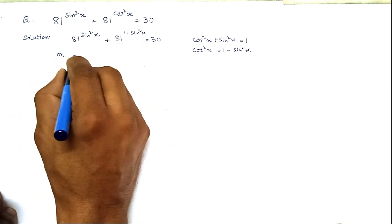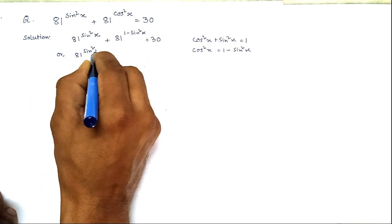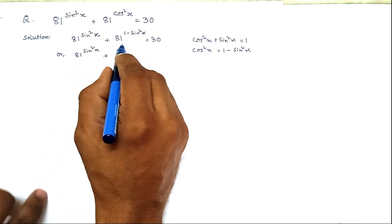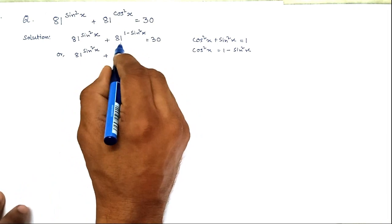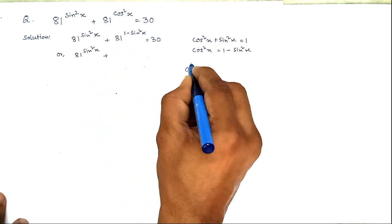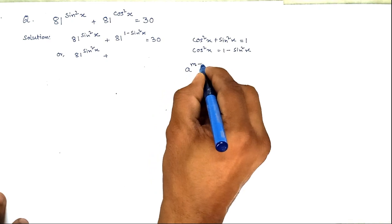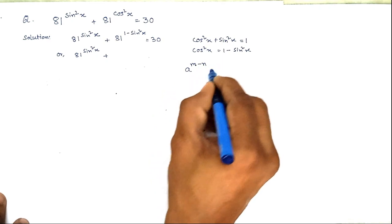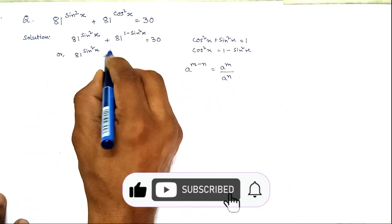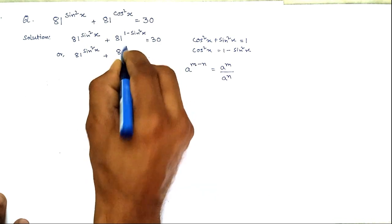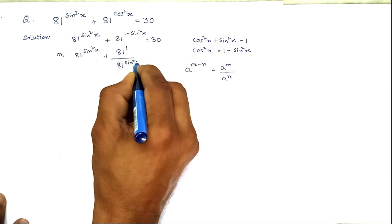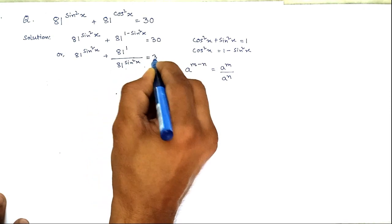Now we keep 81 to the power sin²x intact, and apply the laws of indices to the other expression. We know that a to the power (m minus n) equals a to the power m divided by a to the power n. Applying this, it becomes 81 to the power sin²x plus 81 to the power 1 divided by 81 to the power sin²x, equals 30.